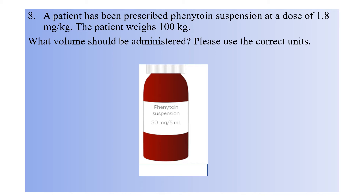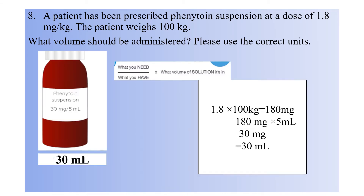Question eight: a patient has been prescribed phenytoin suspension at a dose of 1.8 mg per kg. The patient's weight is 100 kg. What volume should be administered? The correct answer is 30 mL. First, calculate the total mg needed: 1.8 multiplied by 100 kg equals 180 mg. Then apply the formula: what you need divided by what you have, multiplied by the volume. You need 180 mg, and you have 30 mg per 5 mL. Calculating this gives 30 mL.